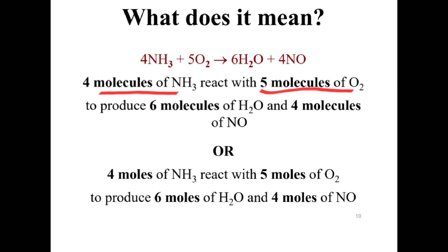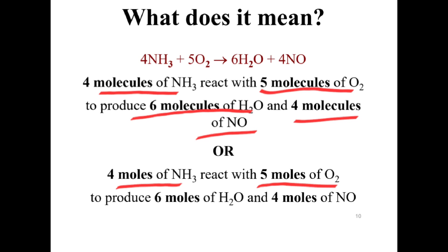Four molecules of ammonia react with five molecules of oxygen to produce six molecules of water and four molecules of nitrogen monoxide. When four moles of ammonia react with five moles of oxygen, they produce six moles of water and four moles of nitrogen monoxide.